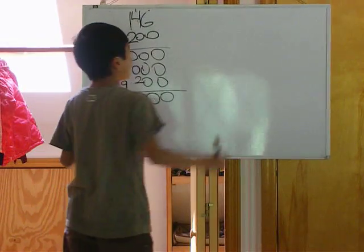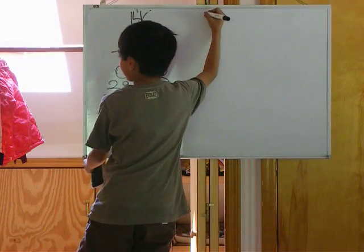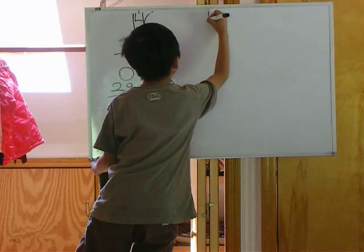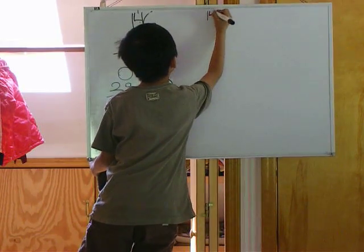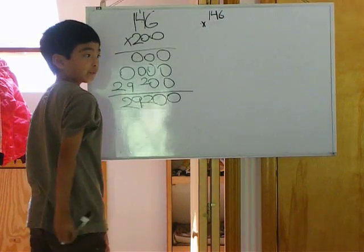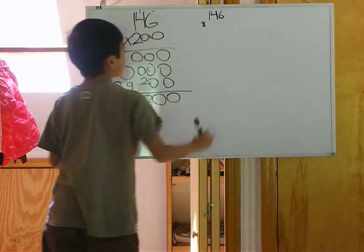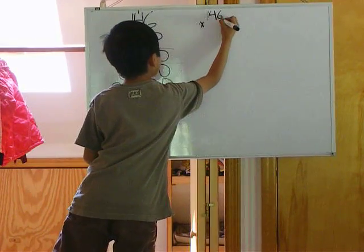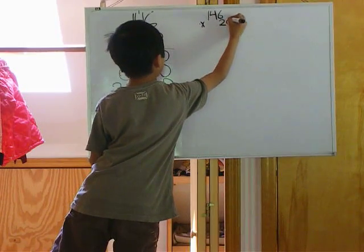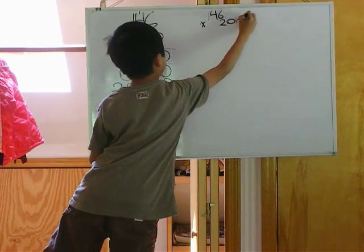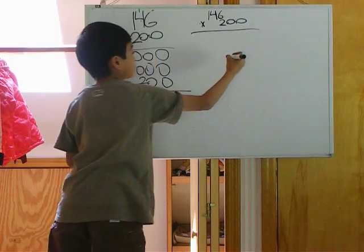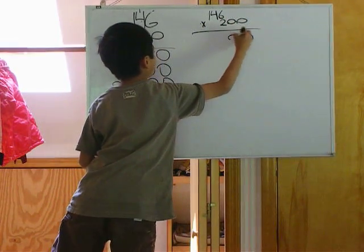Now the new way. Write 146 the same way, and write 2 underneath the 6 and put the 0 to the right. First step: bring the arrows down.